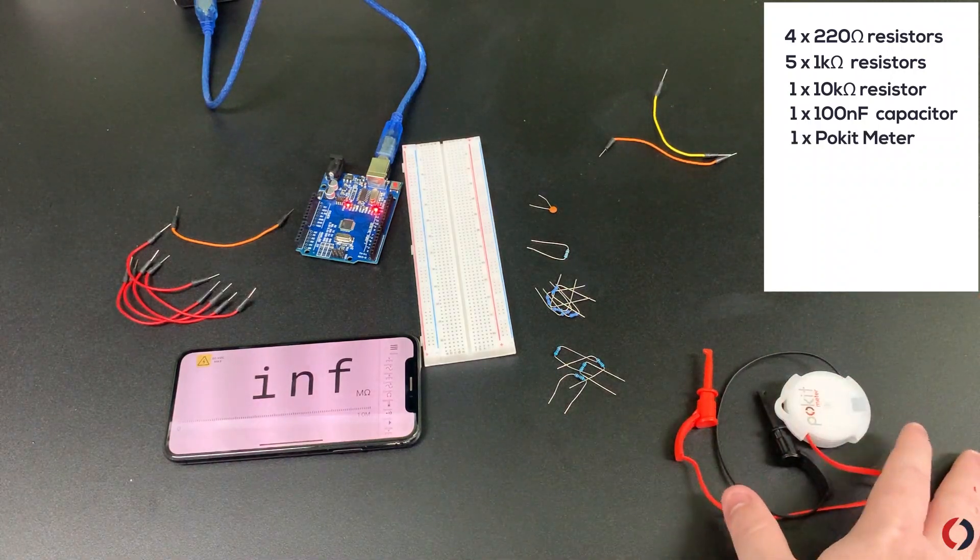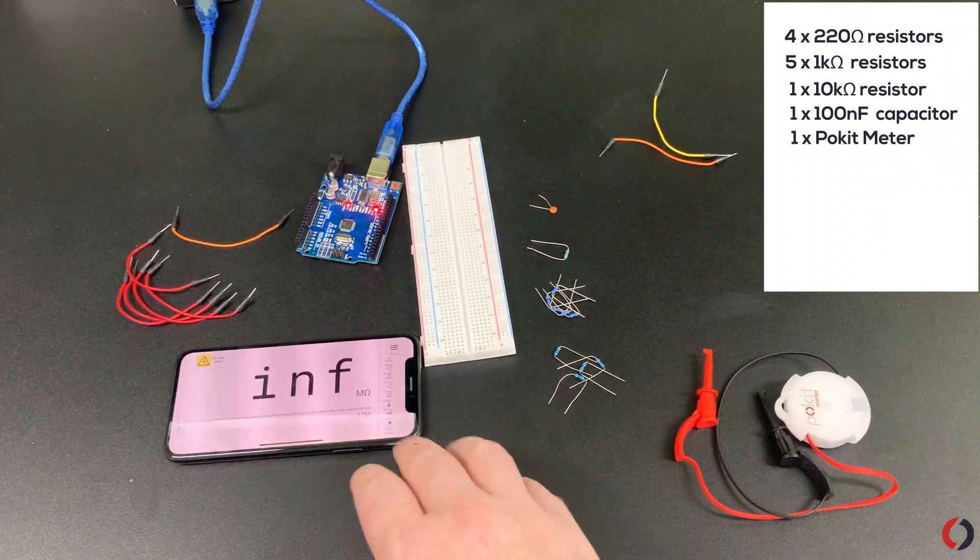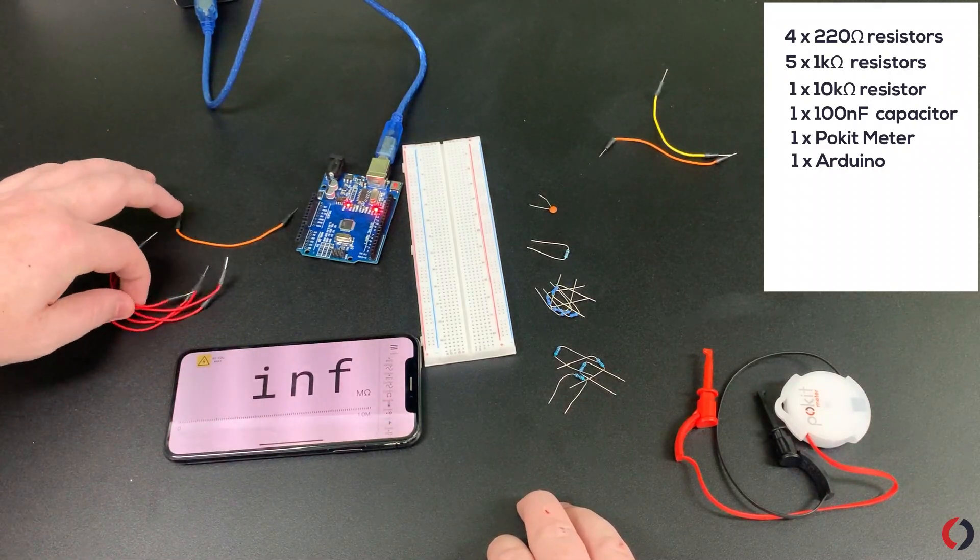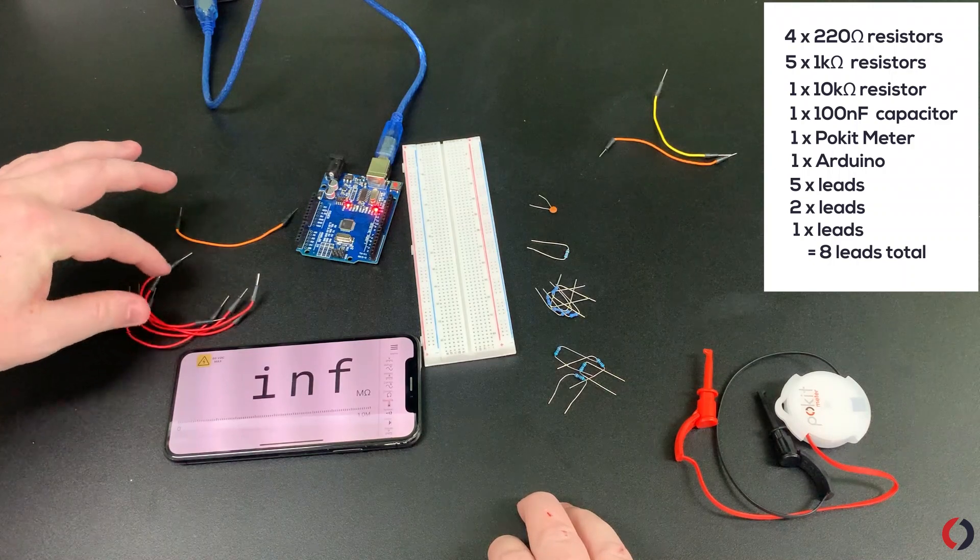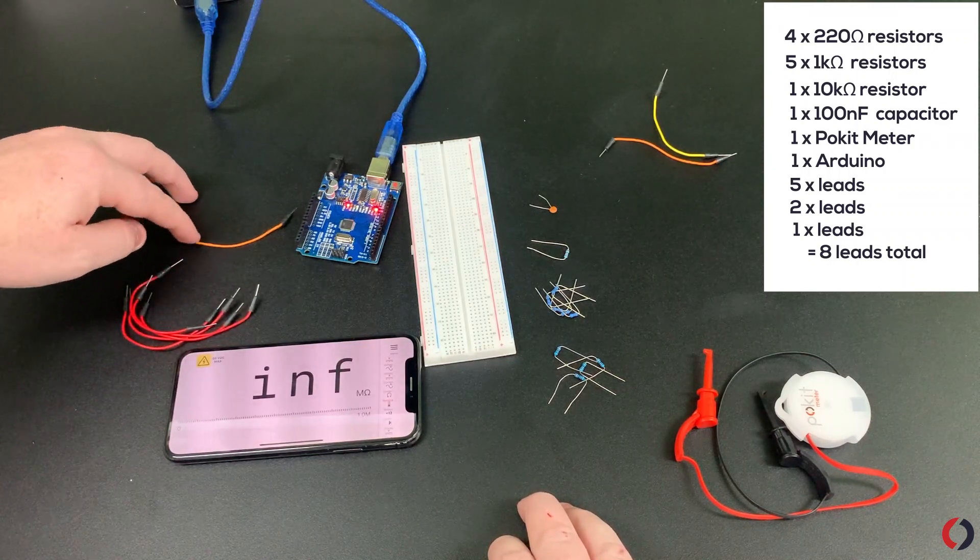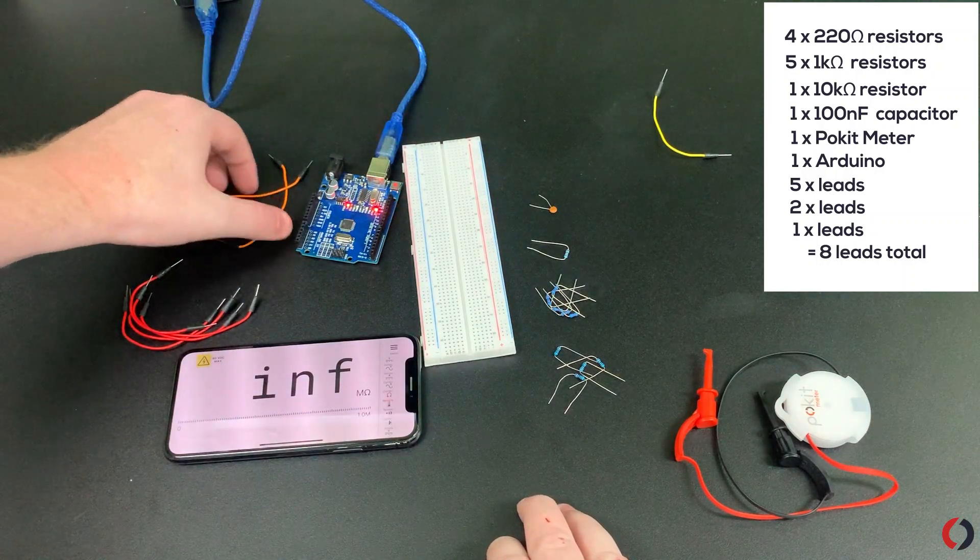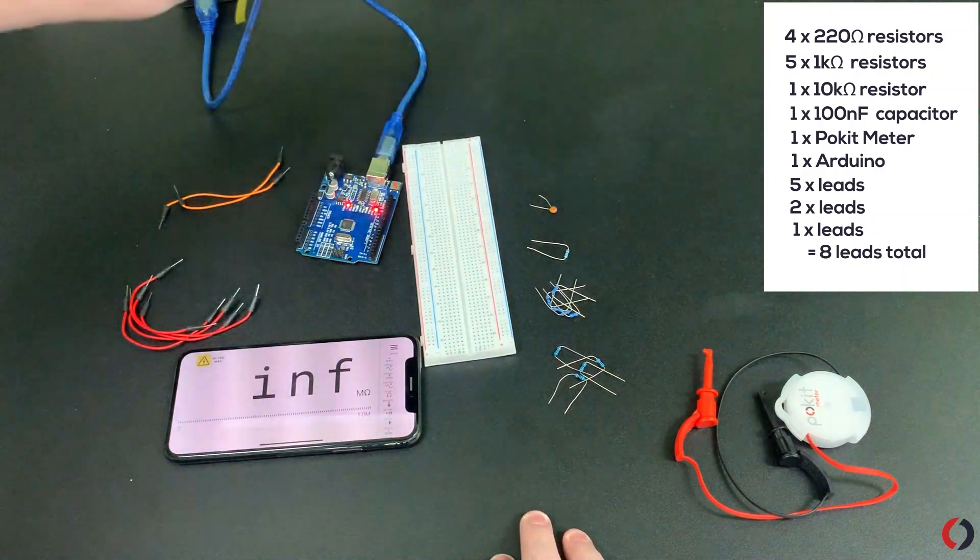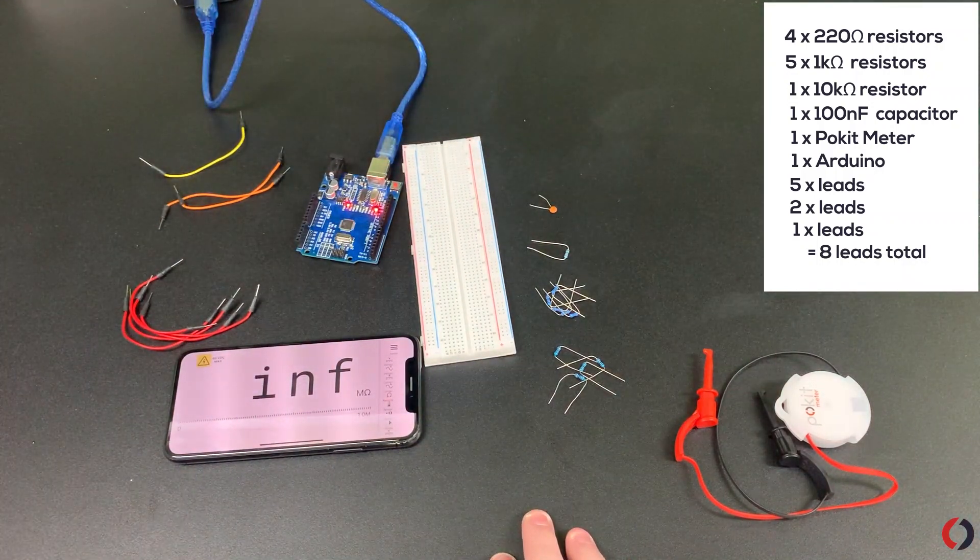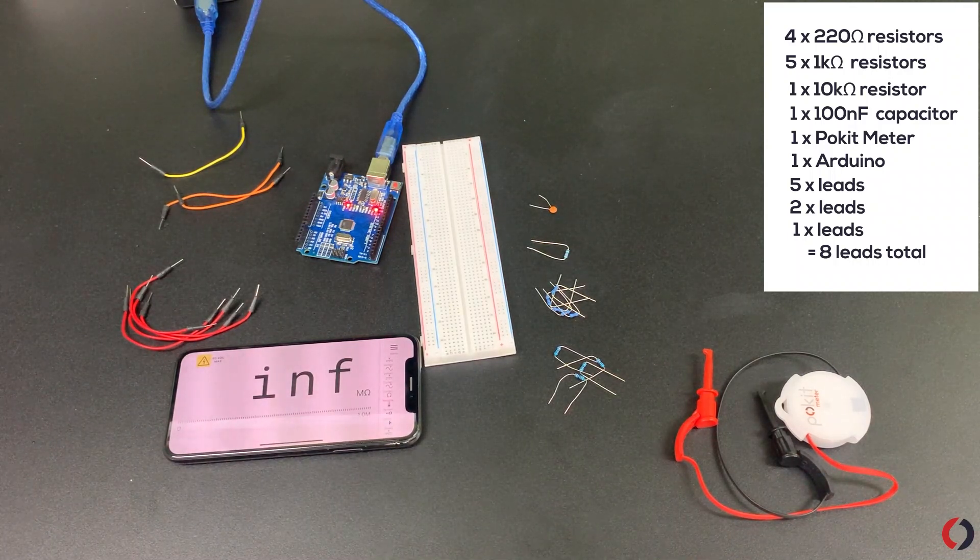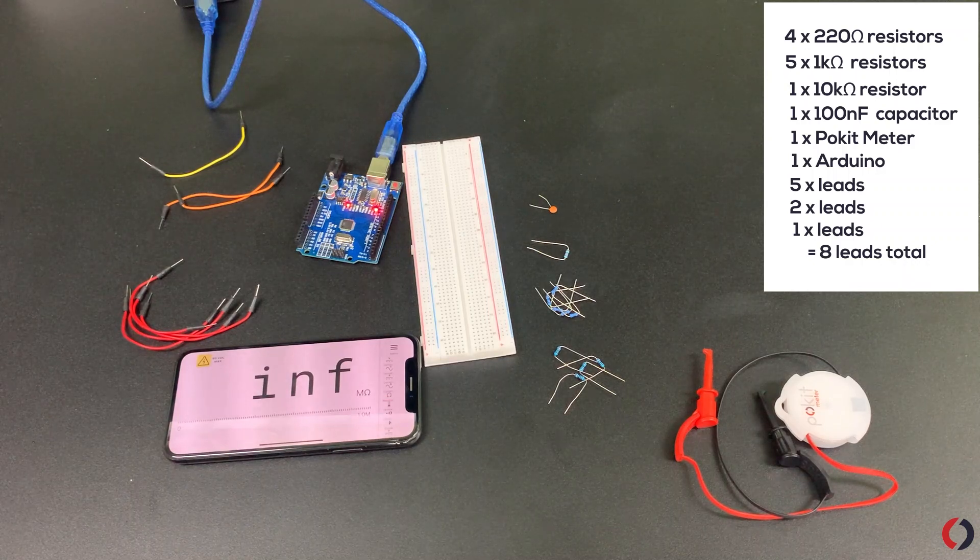Obviously we have our Pocket Meter and our mobile phone with the application. We have an Arduino from our kit, five, well in our case, red leads, two jeans, two orange, and one yellow. It's arbitrary what colors you choose as long as you follow some kind of standard so you don't get confused in the wiring.